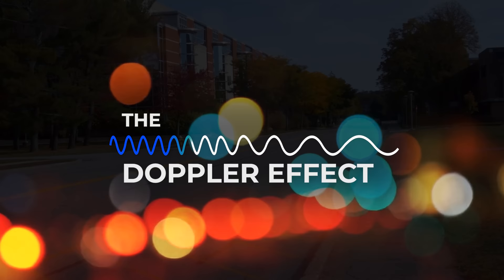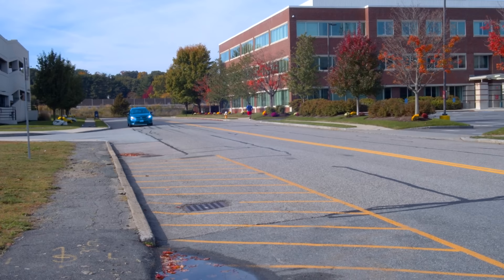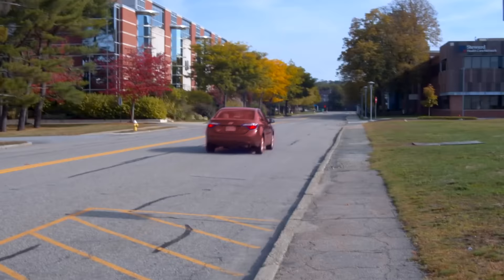But it also affects light in the exact same way. If light moved slow enough, we would also see the car change color as it passed us by. The reality is, light moves far too fast for us to notice anything like this.